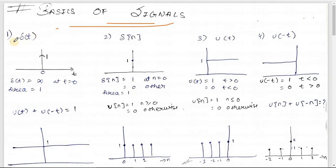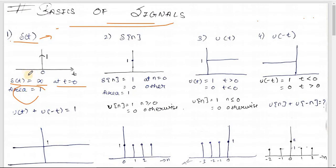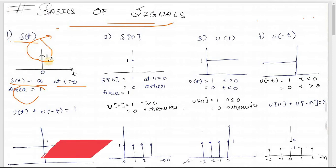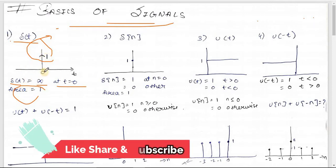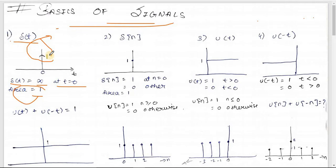Let's begin with the very first signal: δ(t), the impulse function. The magnitude of δ(t) at t=0 is infinite, and the area of this signal is one. As t tends to zero, the magnitude tends to infinite, but the area remains one. Whenever you see an arrow in a continuous signal, it signifies the area — so the arrow with '1' means the area is one.